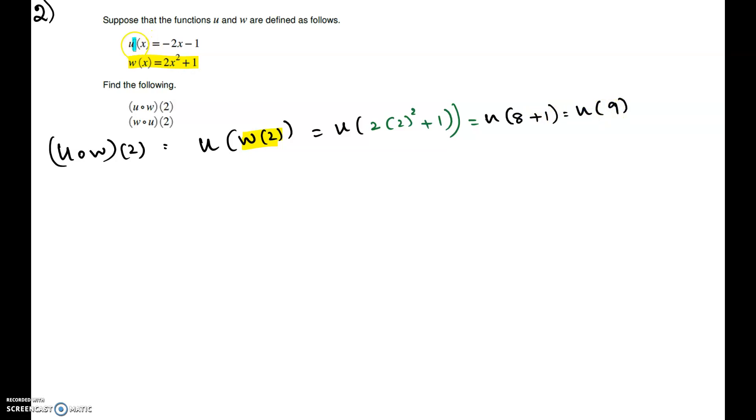Now, you have to go to the first function, u, where you have to change the x there by 9. So, it is negative 2 times 9 minus 1. So, minus 18 minus 1, which is negative 19. The first part, u composite w at 2 is negative 19.